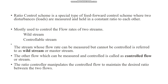There are two disturbances — two flows, two liquids, or two solids. The ratio of these two disturbances or loads are measured and held at a constant ratio to each other. There are mostly two control flow rates or two streams. We call them the wild stream or the controllable stream.